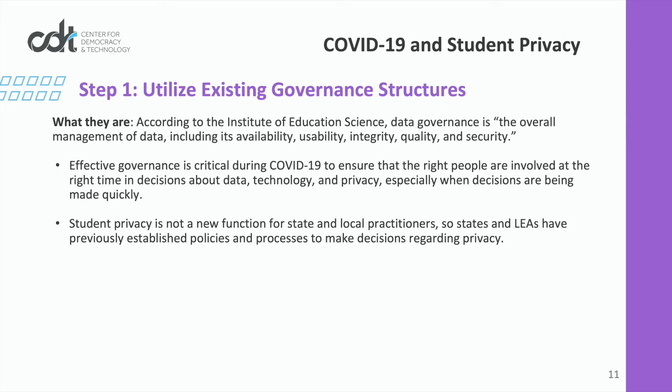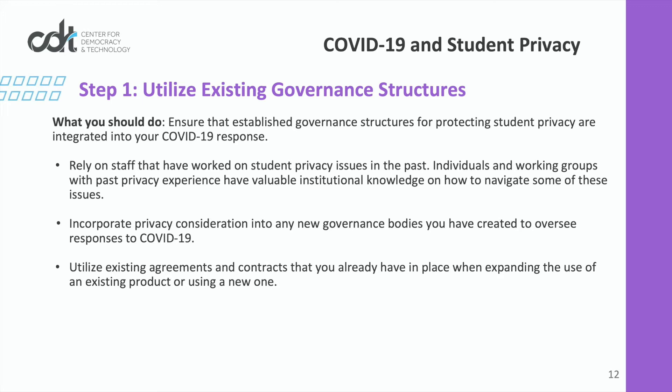To start, practitioners should utilize existing data governance structures. Data governance refers to the people, processes, and structures in place for managing data and privacy overall. Good data governance is especially important during COVID-19 because it ensures that even when decisions are being made quickly in response to coronavirus constraints, privacy-minded practitioners can weigh in on discussions and inform thoughtful decision-making. Student privacy is not a new function for state and local practitioners, so your organization likely has pre-established policies and processes to guide decisions regarding privacy.